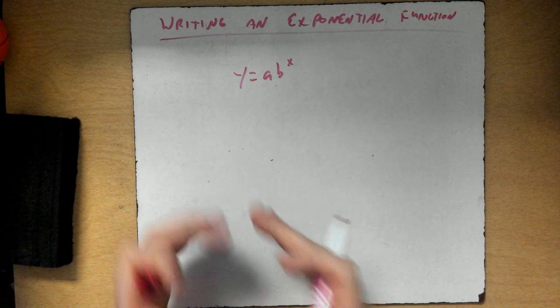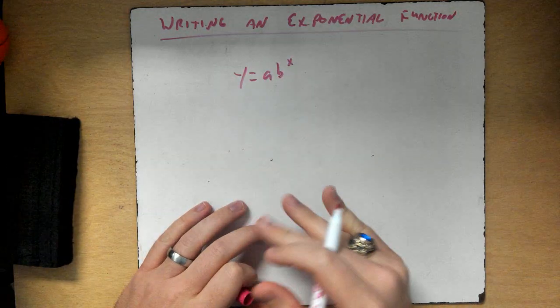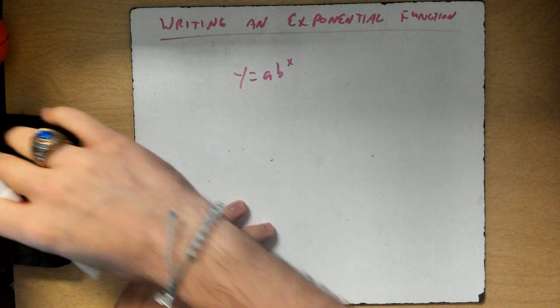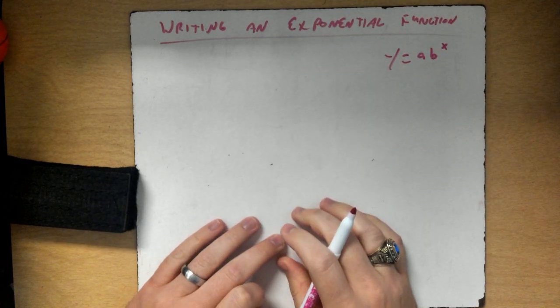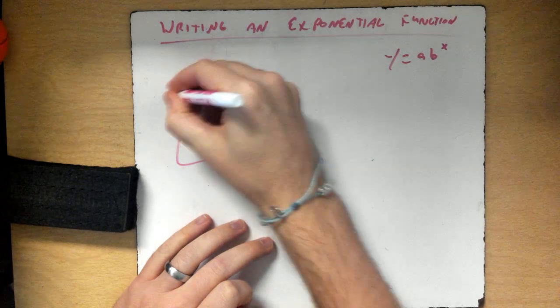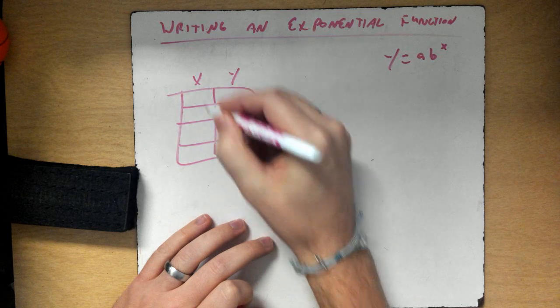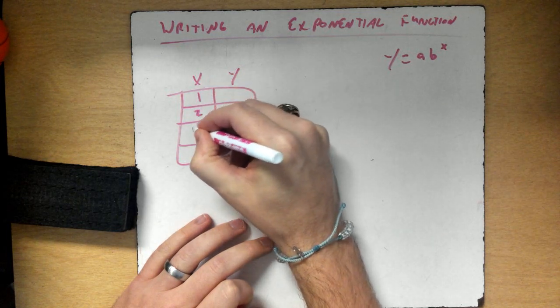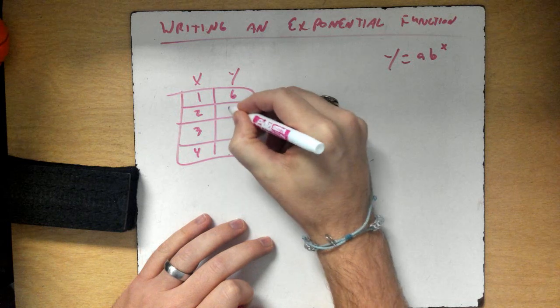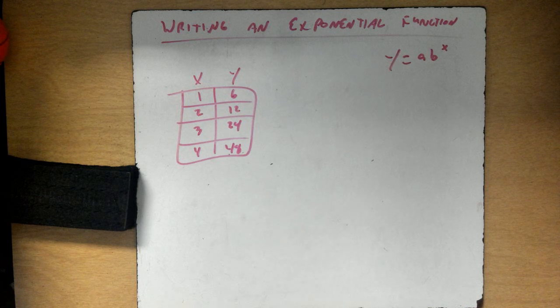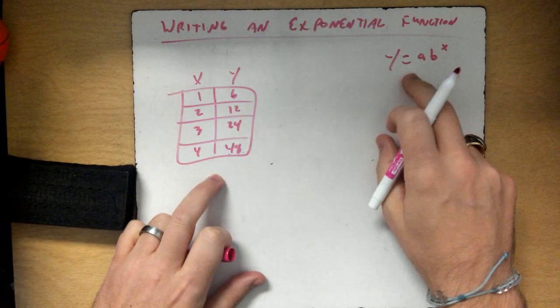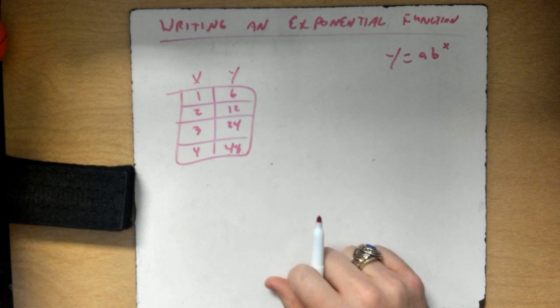We're going to solve using a table and write a function using this equation. So let's set up a table with x and y values. We have x: 1, 2, 3, 4 and y: 6, 12, 24, and 48. We're trying to write the equation for this data.